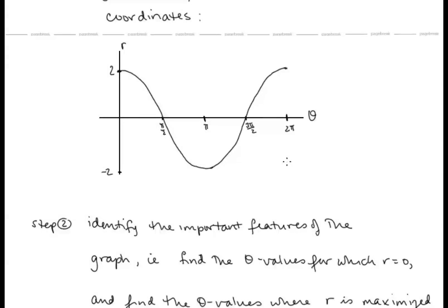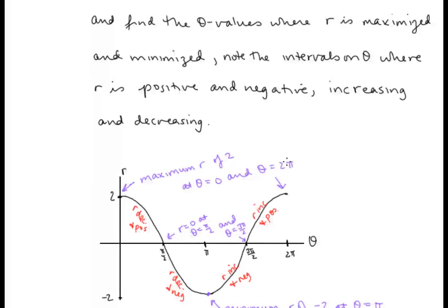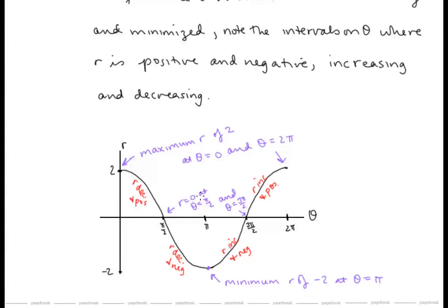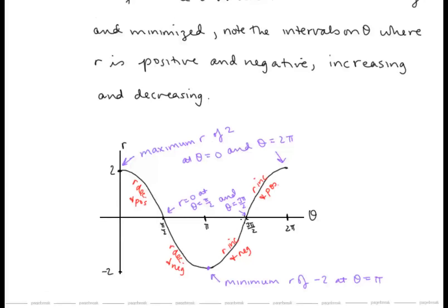On the rectangular graph of r equals 2 cosine theta, r equals 0 at theta equals π/2 and 3π/2. There's a maximum r value of 2 at theta equals 0 and 2π, and a minimum r value of negative 2 at theta equals π. As theta goes from 0 to π/2, r is decreasing and positive. From π/2 to π, r is still decreasing but now negative. From π to 3π/2, r is increasing but still negative. And from 3π/2 to 2π, r is increasing and positive.